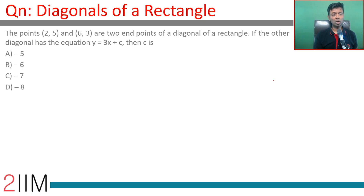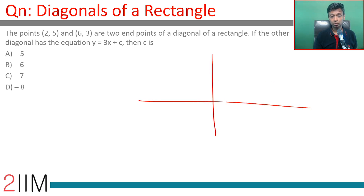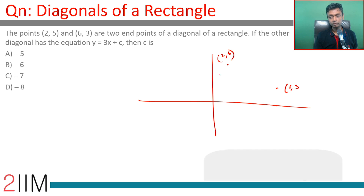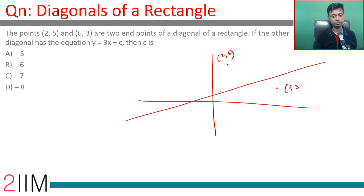The points (2, 5) and (6, 3) are two endpoints of the diagonal of a rectangle. If the other diagonal has the equation y equals 3x plus c, what is the value of c? It's a wonderful question.